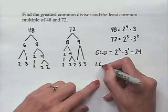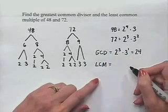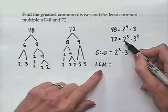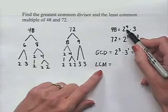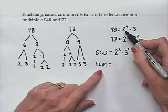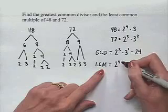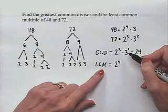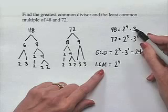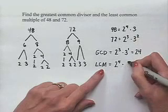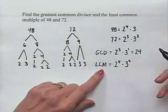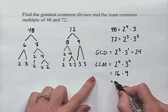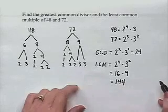To find the least common multiple, we need this number to be a multiple of each. Looking at 48 with 2 to the 4th and 72 with 2 cubed, we need all four powers of 2, so we pick up 2 to the 4th. For 3, we have 3 to the 1st in 48 and 3 squared in 72; we pick up 3 squared to ensure it's a multiple of 72. So the LCM is 2 to the 4th times 3 squared: 16 times 9 equals 144.